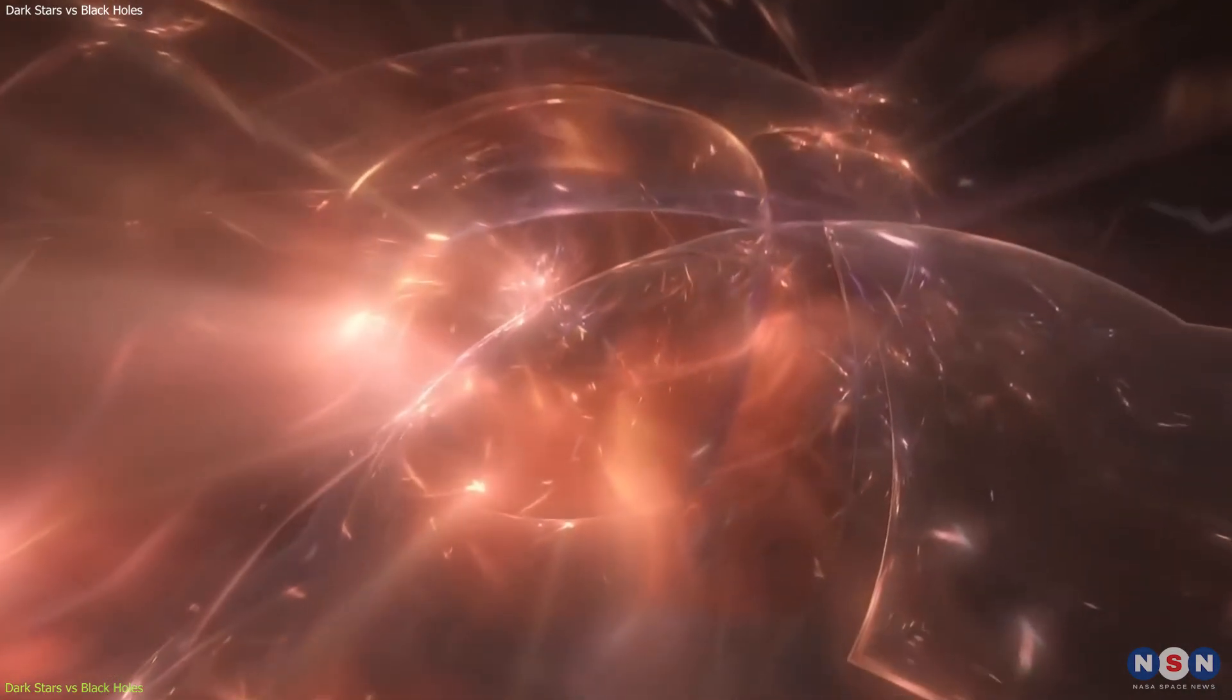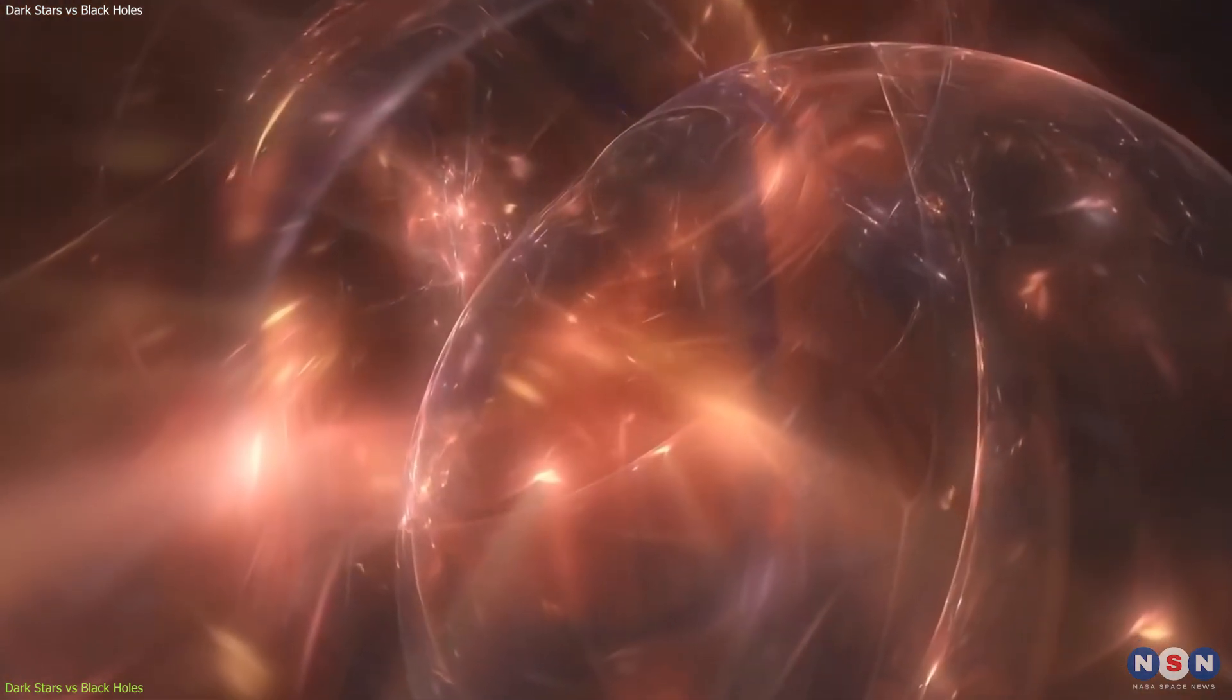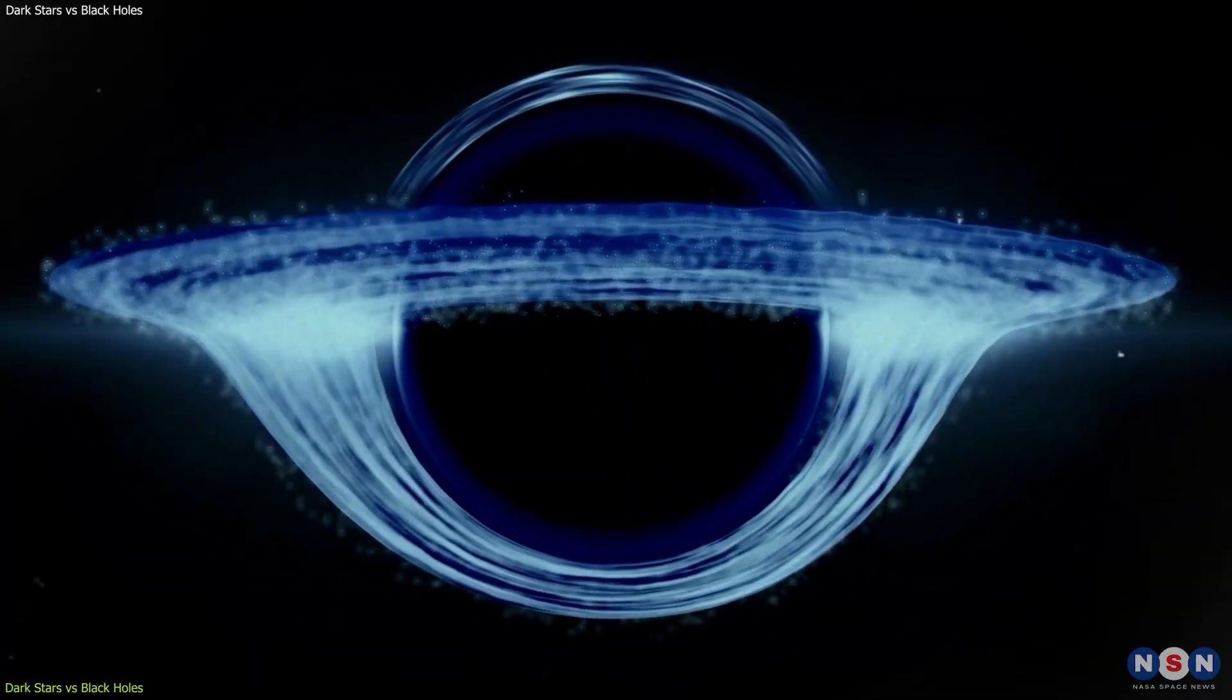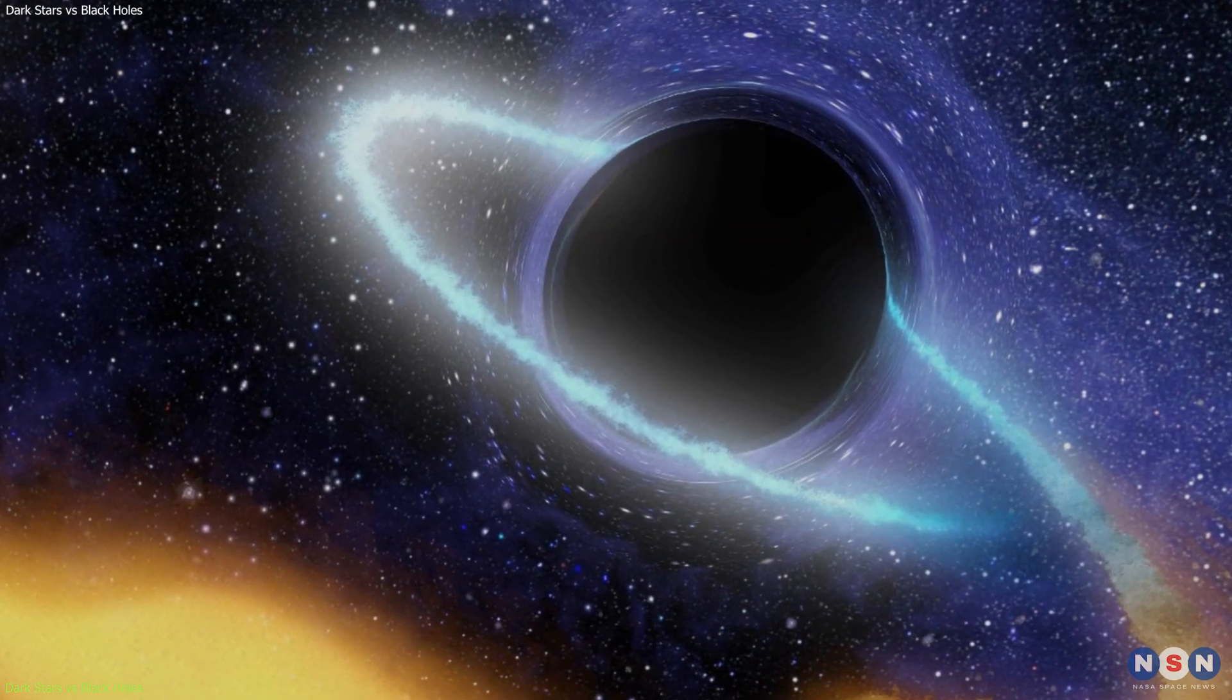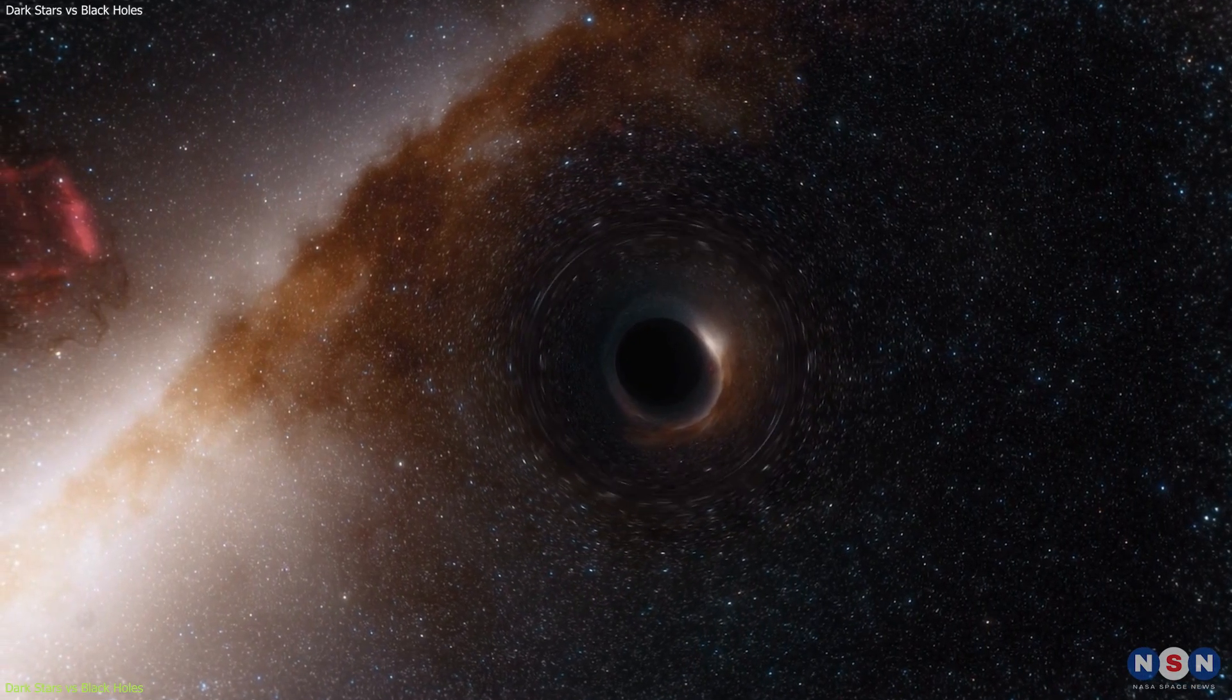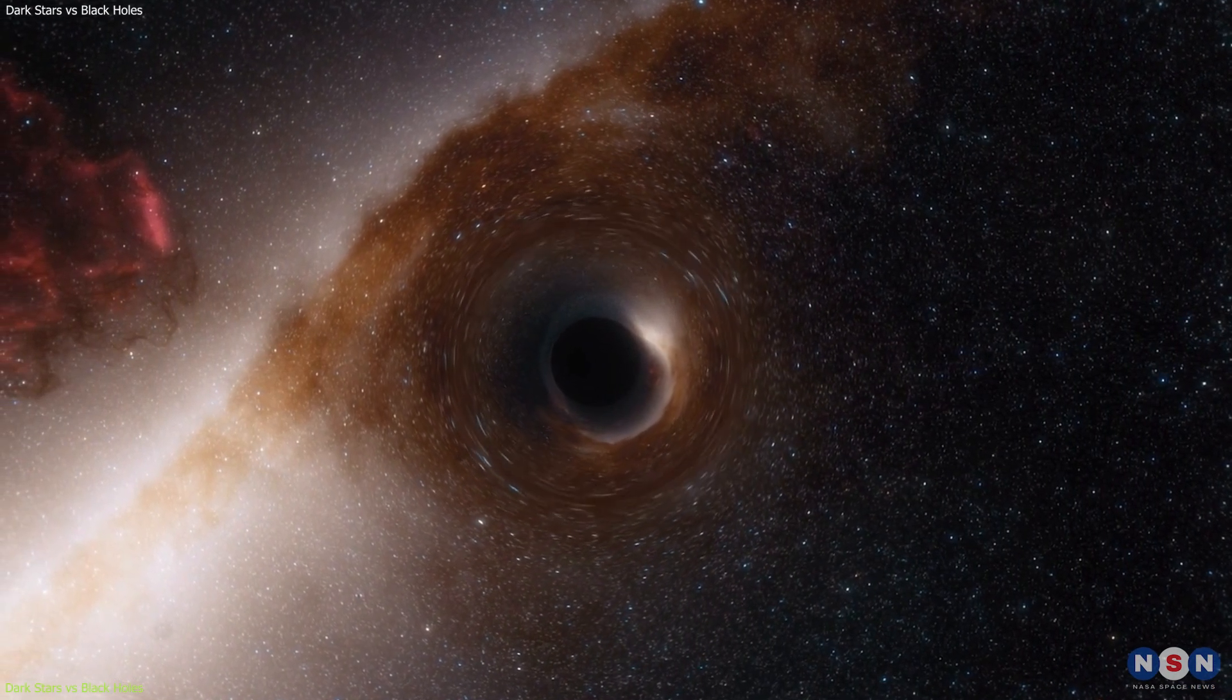However, the light that escapes from a dark star is very redshifted due to the extreme gravity. A third difference is how big they are. A black hole is very compact and has a very small event horizon compared to its mass. A dark star is very large and has a very large event horizon compared to its mass. This means that a black hole has less space inside its event horizon than a dark star with the same mass.